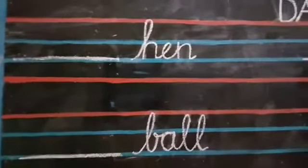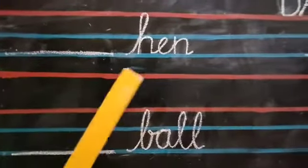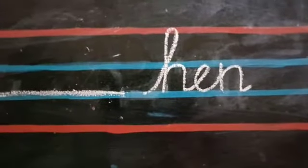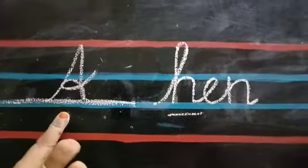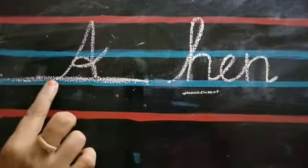Now, all of you look at the board, children. Here are a few words. All of you know these words. H, E, N — HEN. Here is a dash. What should you write here? A or AN? Check the first letter, children — H. Is H a vowel? No. So, write only A. Capital cursive letter. Whenever you start writing, the first letter should be in capital.